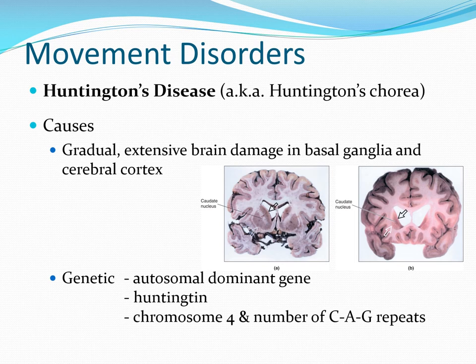Huntington's disease also involves basal ganglia damage, with a gradual loss of neurons — this time not in the substantia nigra but in the striatum. Brain images show that in Huntington's disease the lateral ventricles are physically larger because the neurons around the ventricles have died off. The textbook versions using real human cadaver brains are more disturbing than these idealized illustrations.